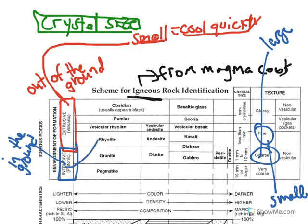With intrusive, crystals are going to be large because it's underground — it's much hotter down there — so it's actually going to cool much more slowly.